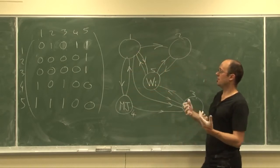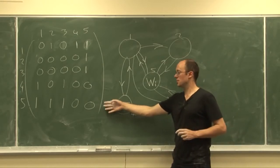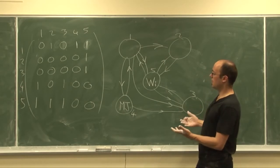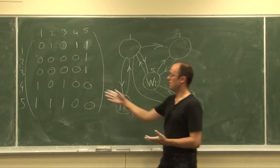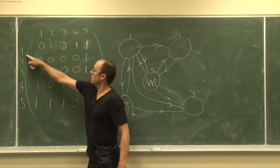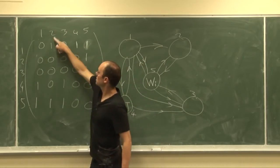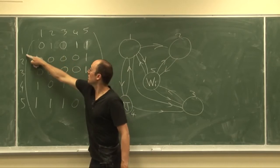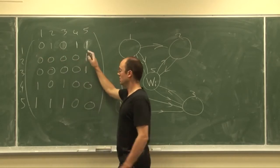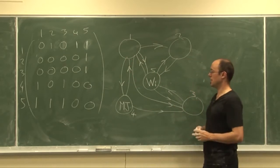So all of this information is going to be recorded in what's called a matrix — it's kind of an array of numbers. And because there were five webpages, it's a five-by-five array of numbers. The numbers here just represent the number of links. So there was one link from page one to page two, so I put a one here. But there was no link from page one to page three, so I put a zero here. And this table here should hopefully represent what's displayed here.